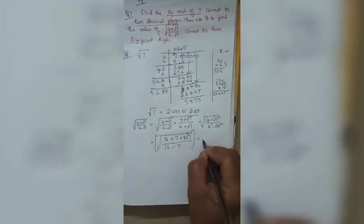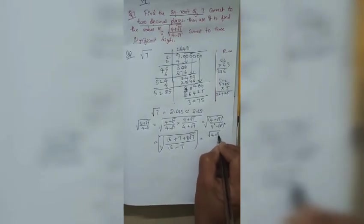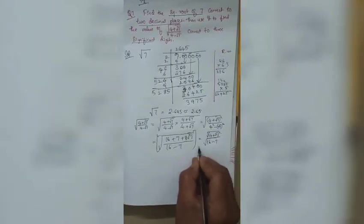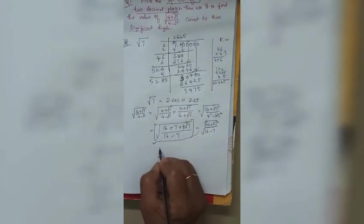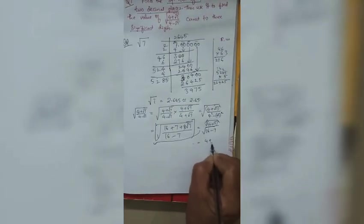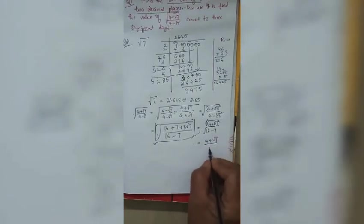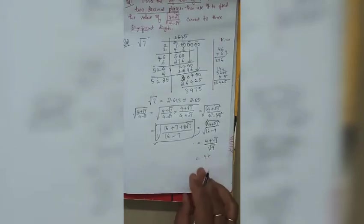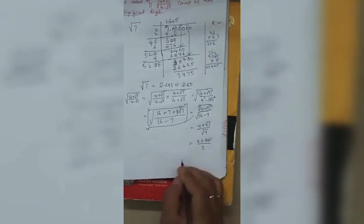There is also a shortcut method. Instead of fully expanding, we can write: √((4 + √7)² / 9) = (4 + √7) / 3.